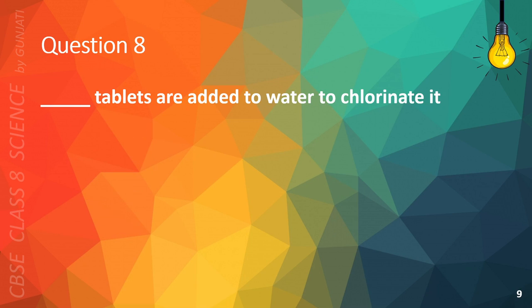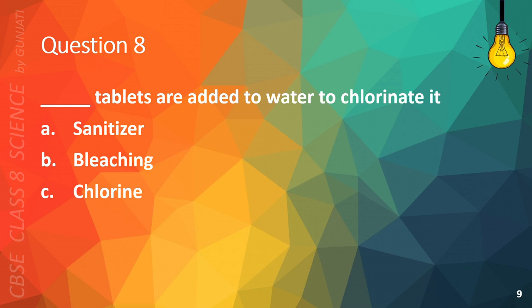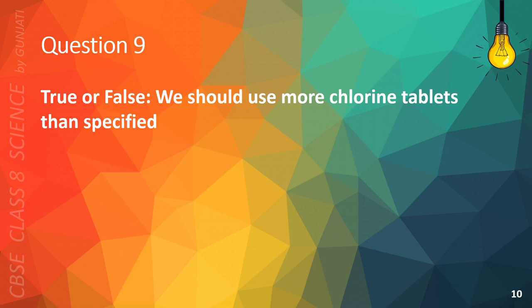Question 8. Blank tablets are added to water to chlorinate it. A. Sanitizer. B. Bleaching. C. Chlorine. Or D. Nitrogen. The correct answer is C. Chlorine.